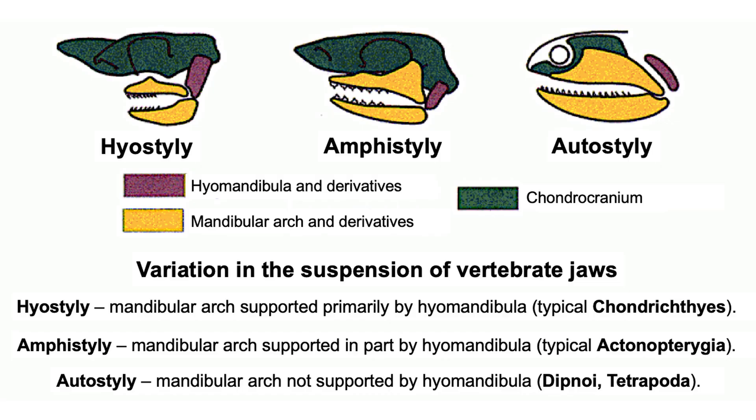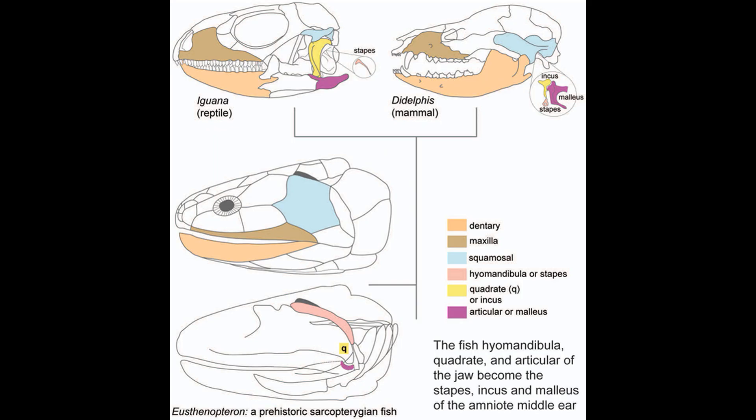But we forgot to mention an important trait. Vertebrates have different ways they attach their upper and lower jaws to each other and to the skull. For example, in most modern sharks, the jaws are mainly supported by the hyomandibular arch. On the other hand, in the lineage leading to the lungfish and tetrapods, the upper jaw became fused to the skull, and the lower jaw articulates directly with the upper jaw — the hyomandibular arch does not provide support.